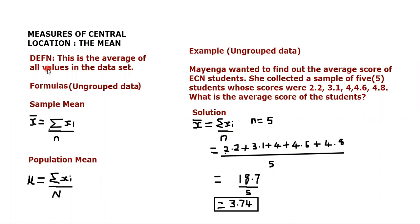The definition is this is the average of all values in the data set. So given a particular data set, the average of all values in that data set is what we call the mean.